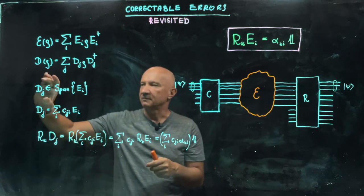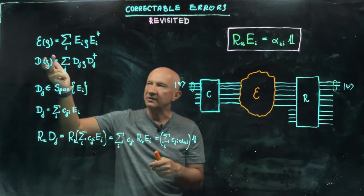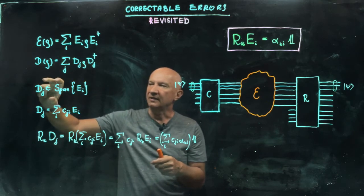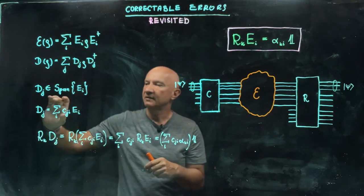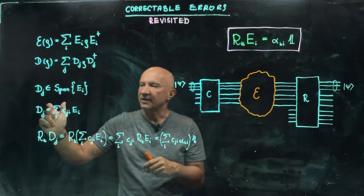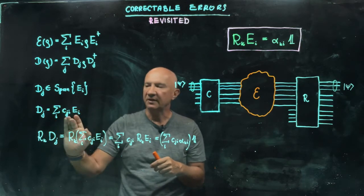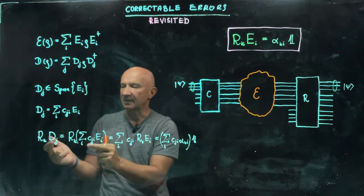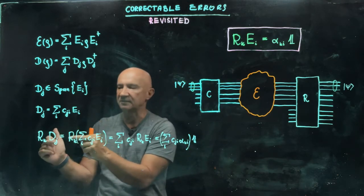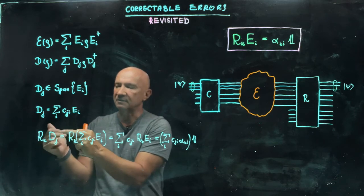So coming back to this point here, so if the new Kraus operators associated with this new map are in the span of original errors EI, then of course DJ, every single DJ can be written as a linear combination of errors EI. And then if you look at this condition here and check whether it satisfies for errors DJ, then you can easily see that that is indeed satisfied.